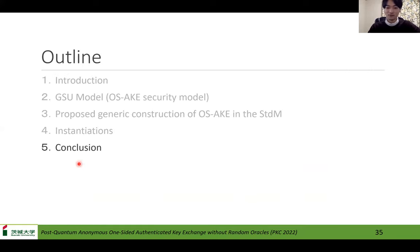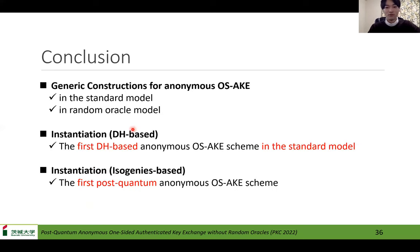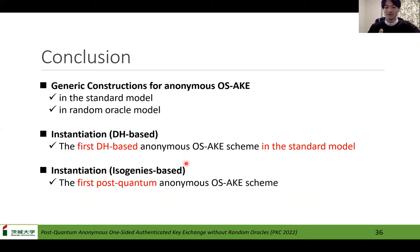Finally, conclusion. We propose generic constructions for anonymous OS-AK, the ones in the standard model and the ones in the random oracle model. We also propose five instantiations of the generic construction. The DH-based scheme is the first DH-based anonymous OS-AK scheme in the standard model, and the isogeny-based schemes are the first post-quantum anonymous OS-AK schemes. Thank you all for listening.